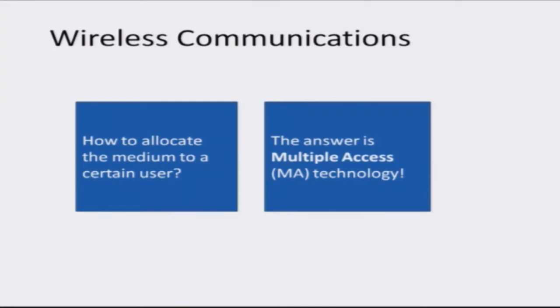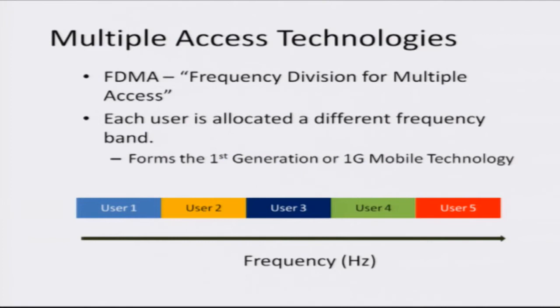The answer through which you can enable multiple people or multiple devices to use a common medium is known as a multiple access technology. The name itself means that different users can access the medium following some rules or protocols determined by that particular multiple access technology. One of the earliest and simplest is FDMA, or Frequency Division Multiple Access, in which each user is allocated a different frequency band, so users do not interfere with each other.